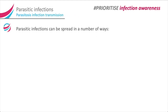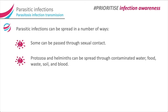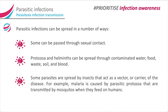Parasitic infections can be spread in a number of ways. Some can be passed through sexual contact. Protozoa and helminths can be spread through contaminated water, food, waste, soil and blood. Some parasites are spread by insects that act as a vector or carrier of the disease. For example, malaria is caused by parasitic protozoa that are transmitted by mosquitoes when they feed on humans.